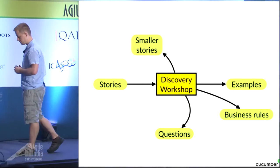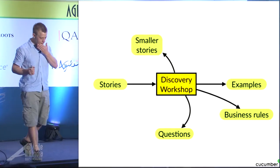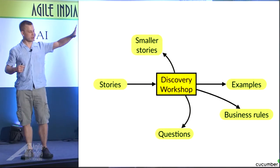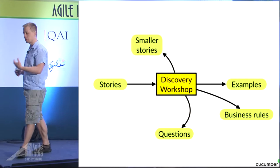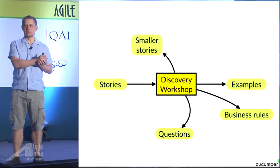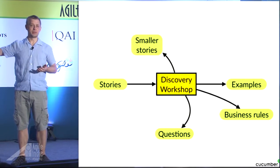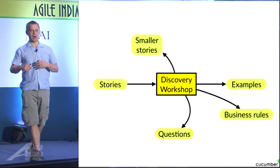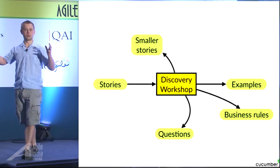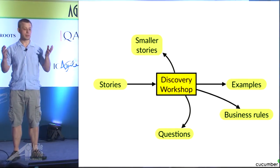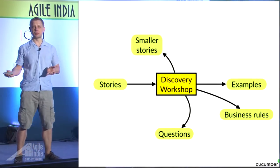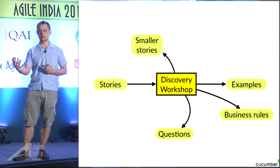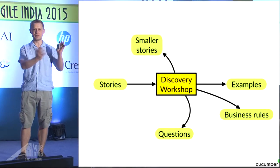Another thing that happens is that you can create smaller stories. Tomorrow in my workshop I'm going to show you some techniques about how you can come up with more examples for a story. But one thing that happens is, for some stories, you'll get a lot of examples, and you'll realize that there are so many different rules. When you see lots of examples and lots of rules, that's an indication that this is a big story. You can break it up into smaller chunks. It's much easier for the product owner to realize the magnitude of what they're asking for when they can actually experience firsthand through a conversation that there are so many different paths, so many different examples. We have to break this up.